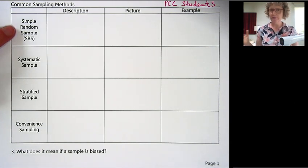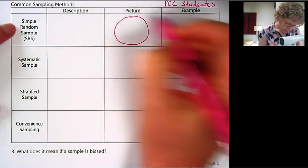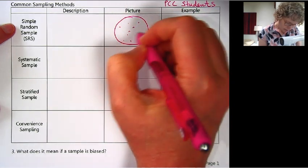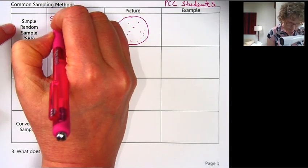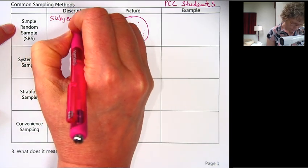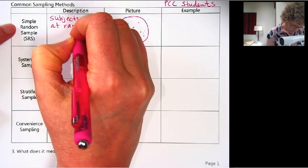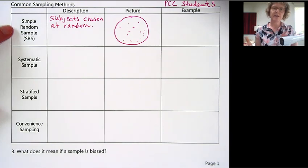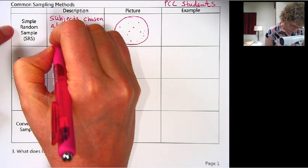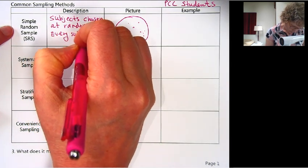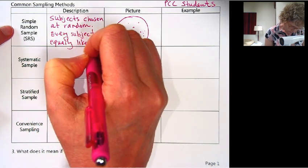So a simple random sample is a very common type of sampling. Let's draw our whole population here. That means we randomly select people from our population. So a simple random sample, subjects are chosen at random. And the characteristic there is that every subject has an equal chance of being chosen. Every subject equally likely.